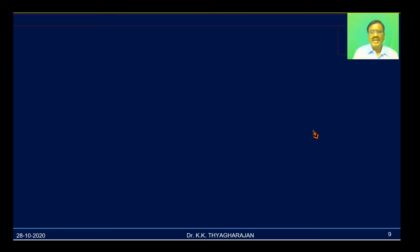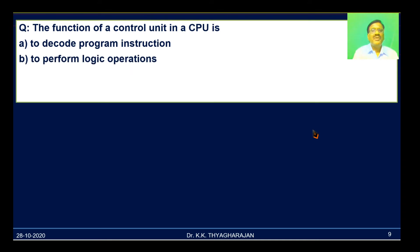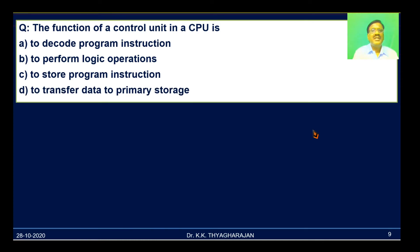Next question: the function of a control unit in a CPU is — A, to decode program instructions; B, to perform logic operations; C, to store program instructions; D, to transfer data to primary storage. The control unit generates timing and control signals, but it can only do so after decoding the instructions — after identifying the instructions. So the control unit also decodes instructions and then generates the necessary control signals. So A is correct.